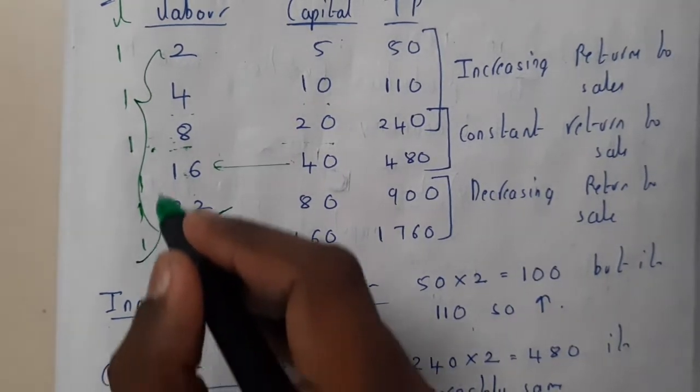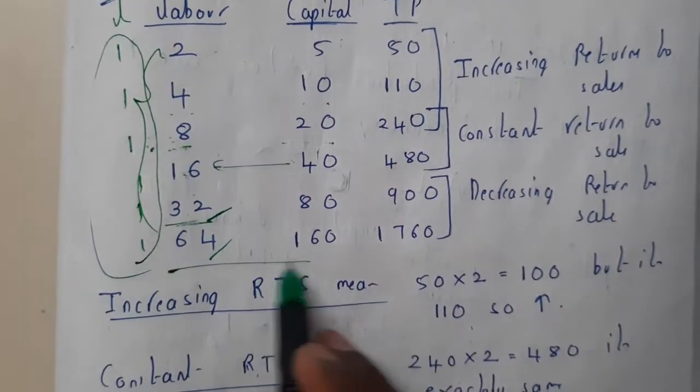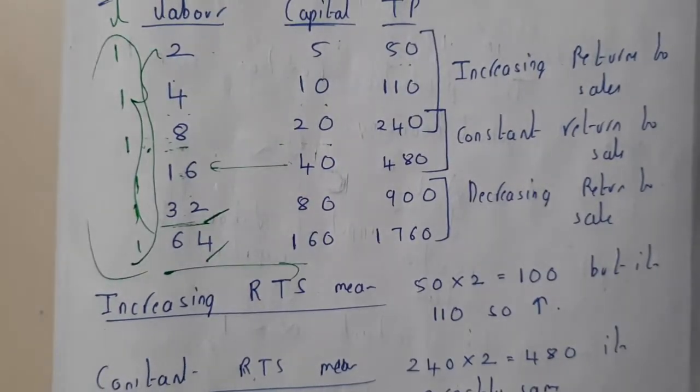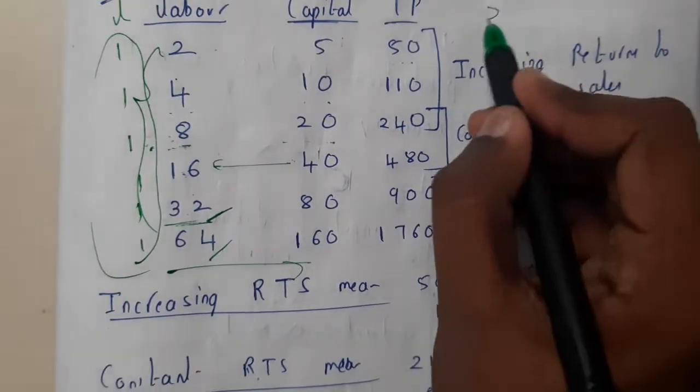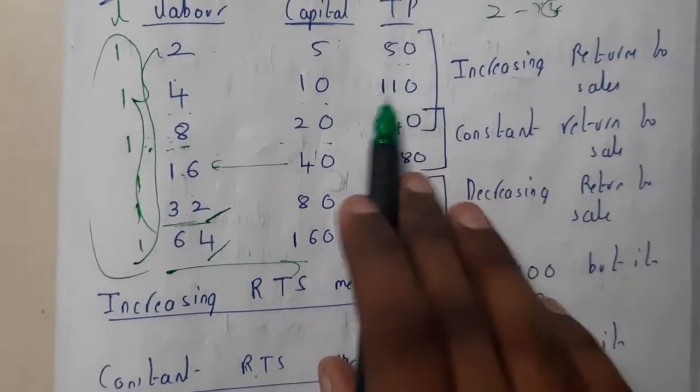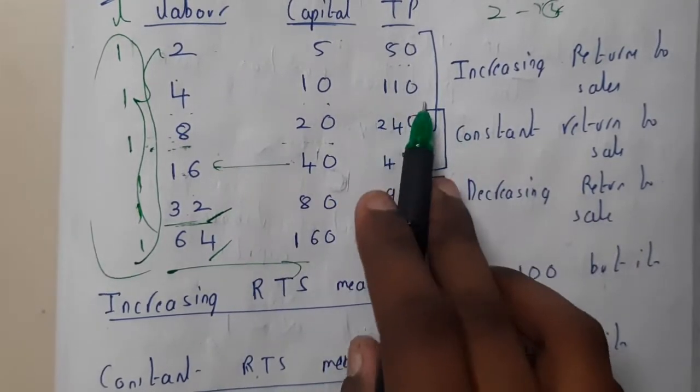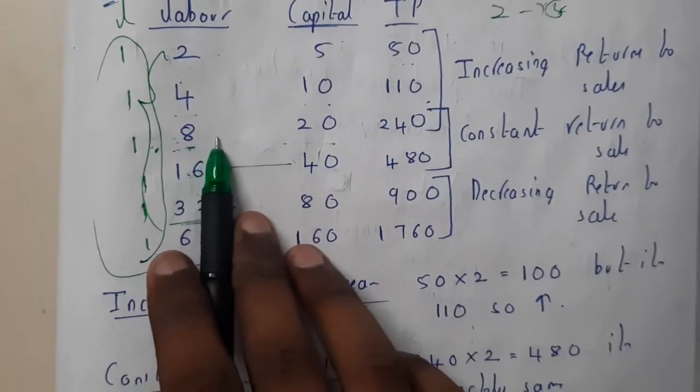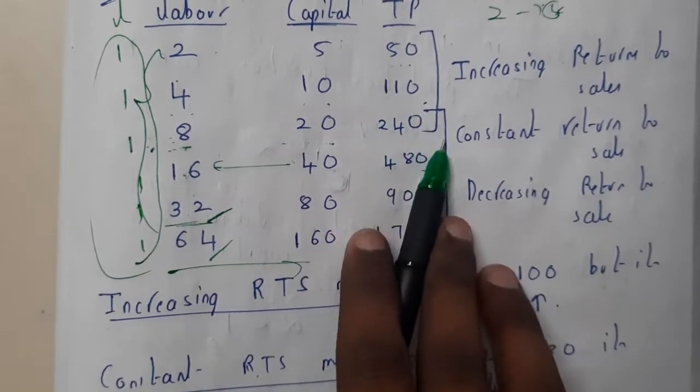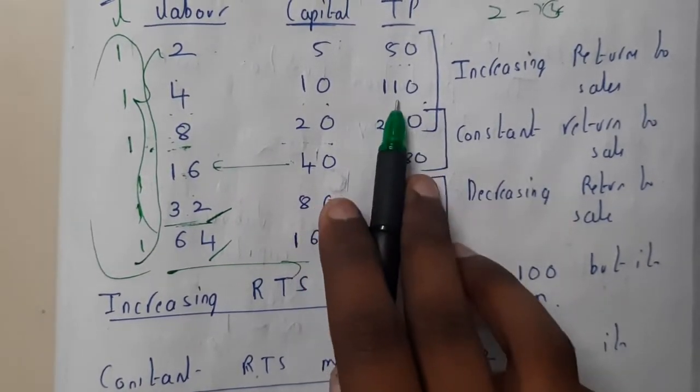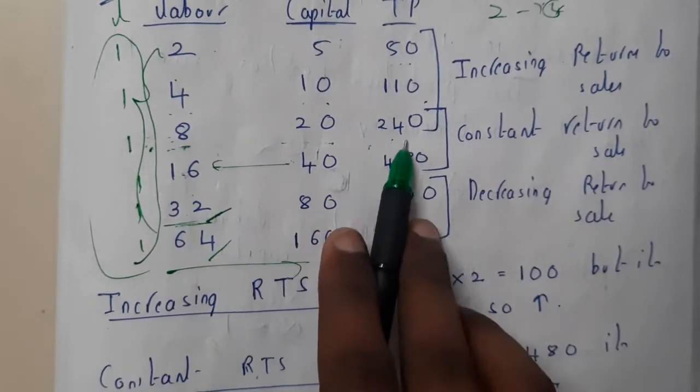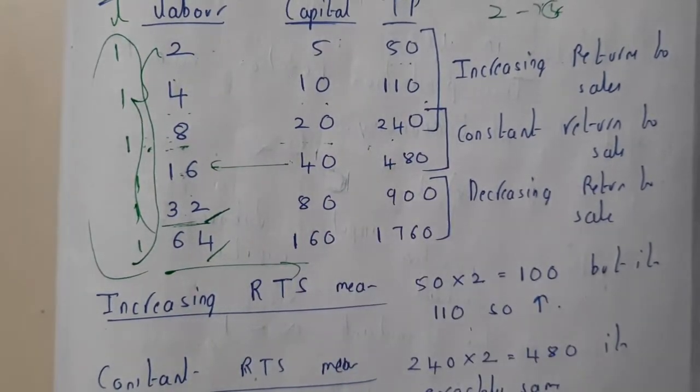All other factors are kept constant, only these two are varying. Initially, if we assume the total product, initially it will be increasing. Two are working, now four are working, so production rate will increase. 50 became double plus something, so 110. When you made 8, it incremented to 240. It should become 220, but it became 240 because it's incrementing.